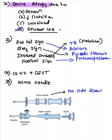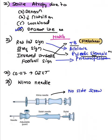A match-the-following radiology question: red tail sign is seen in dextrocardia; string sign is seen in pyloric stenosis (string and stenosis); inverted umbrella sign is seen in intussusception (Fleischner sign); football sign is seen in pneumoperitoneum and necrotizing enterocolitis.